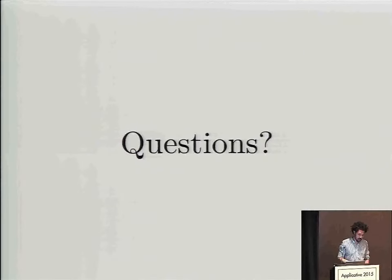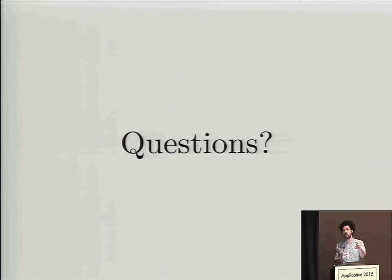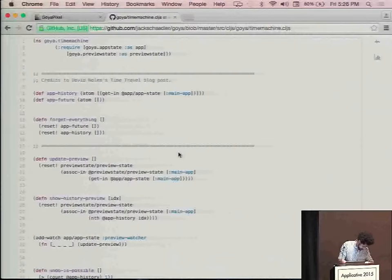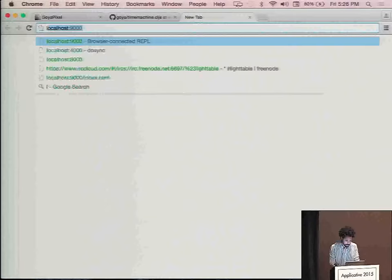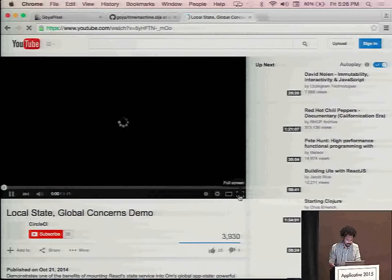I maintain a library called Om, which is a layer over React that uses immutable data as the source of truth instead of mutable data. Under the hood we still use mutation — mutation is a tool — but most programs have far too much of it. There's a company called CircleCI, a continuous integration service, and they built their whole front end using Om. Om has a really cool feature that React doesn't have: you can serialize the entire state of the program, and CircleCI uses it to do a really cool trick where they can copy the entire state of the application and paste it into a different browser, exactly as it was.